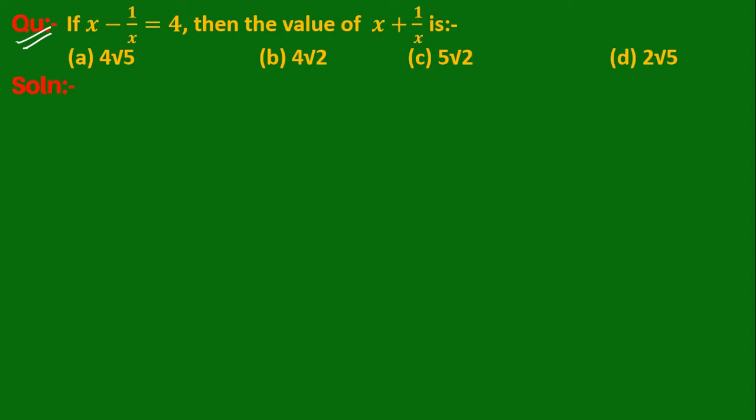Question: If x minus 1 upon x equals 4, then the value of x plus 1 upon x is? We are given that x minus 1 upon x is equal to 4. So first of all, we square both sides.